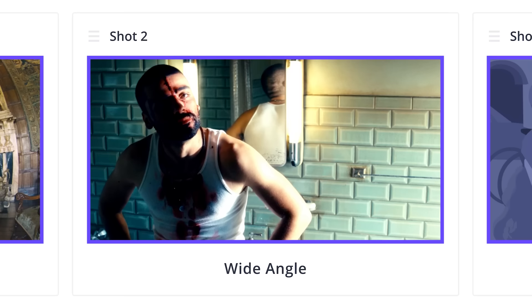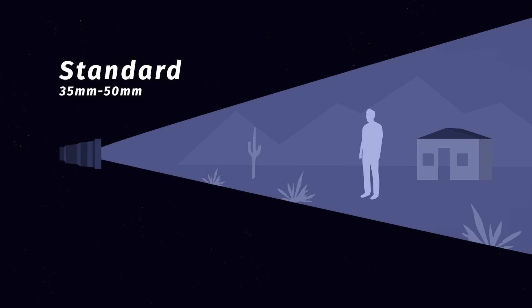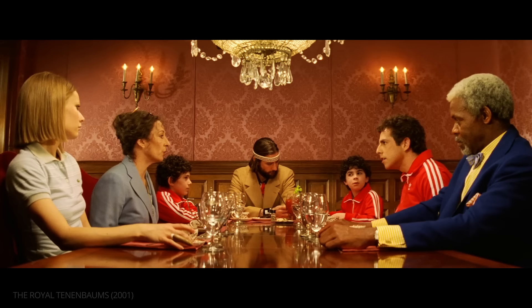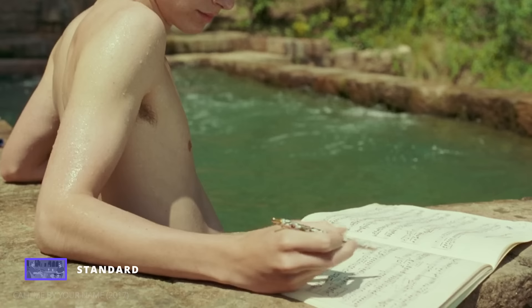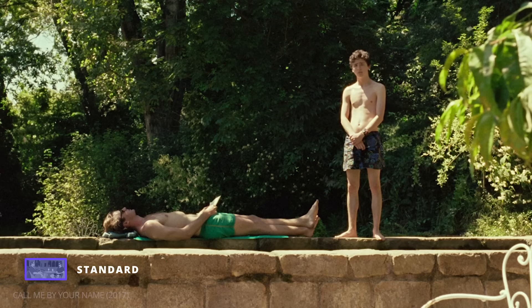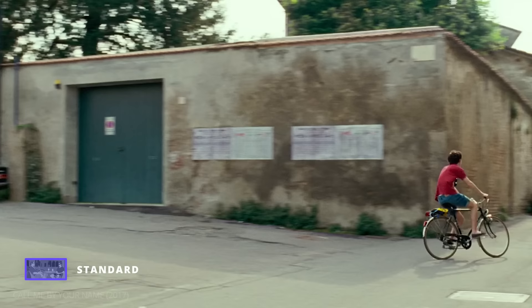Standard lenses, also called normal lenses, are lenses between 35mm to 50mm. The focal length of standard lenses is most similar to how the human eye sees the world. This becomes the ideal choice when cinematographers want a grounded and natural presentation. For example, director Luca Guadagnino's film Call Me By Your Name was entirely shot on a 35mm lens for this reason.